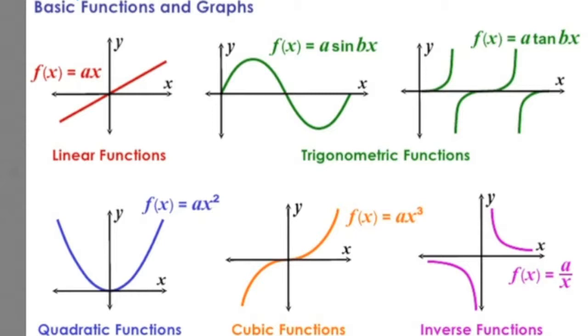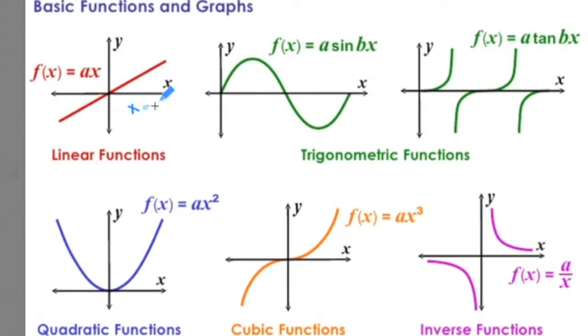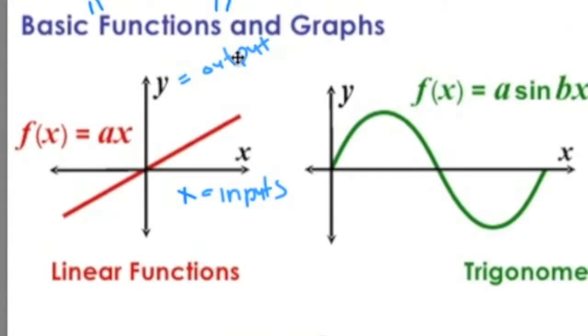A function in math describes a relationship between two variables, an x and a y. We're going to consider that x here are inputs. So our x's on the horizontal axis are the inputs, and the y's are on the vertical axis, those are the outputs. In order for a graph to be a graph of a function, for every input there has to be one and only one output.